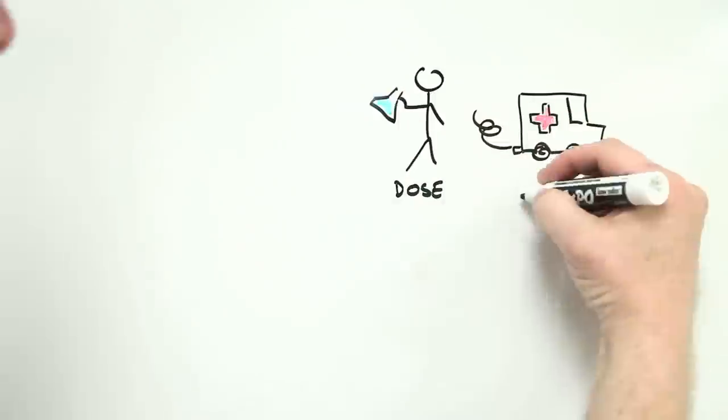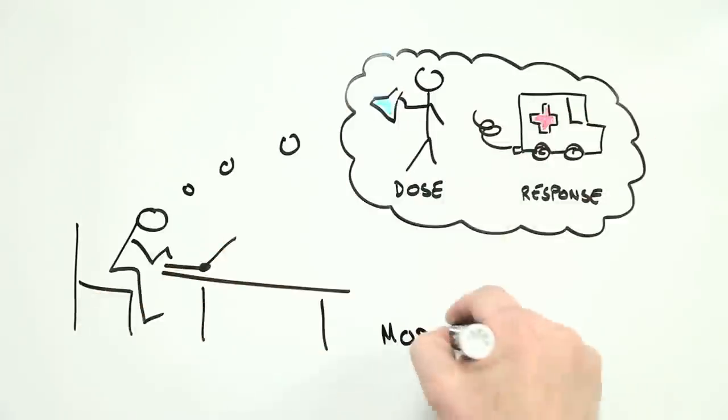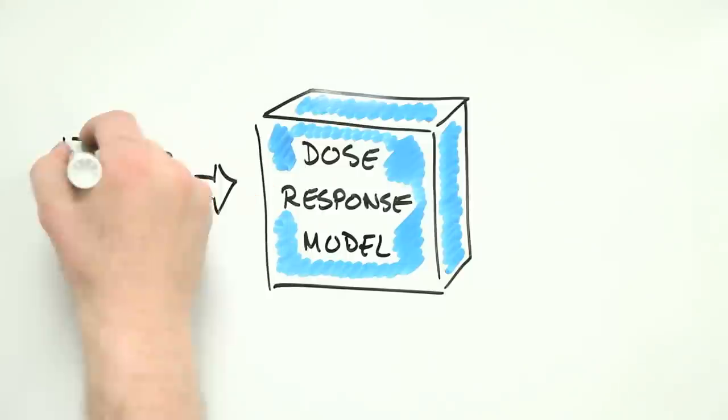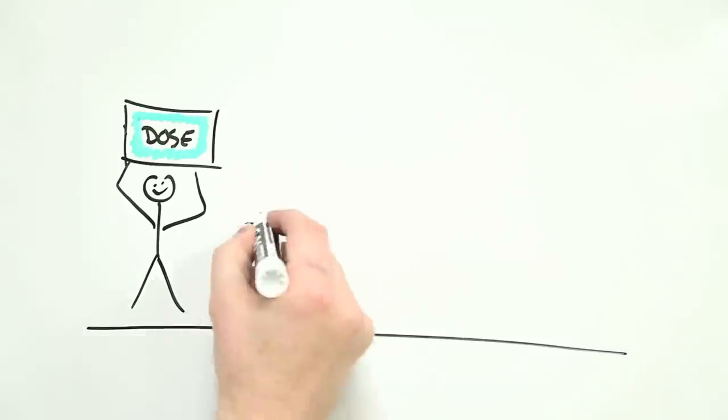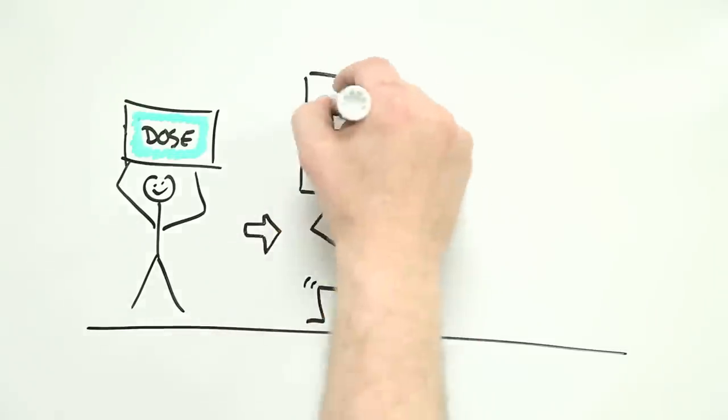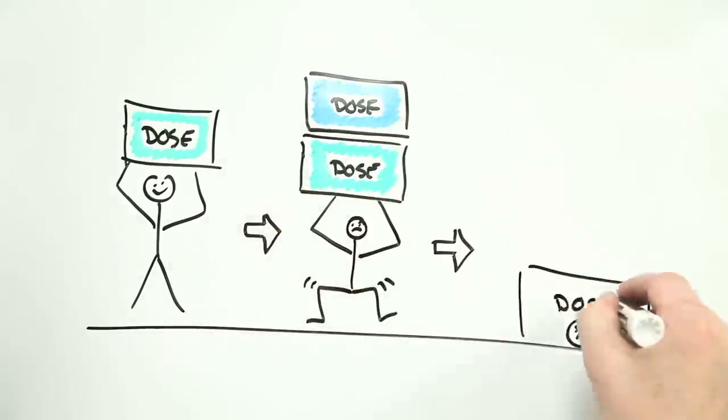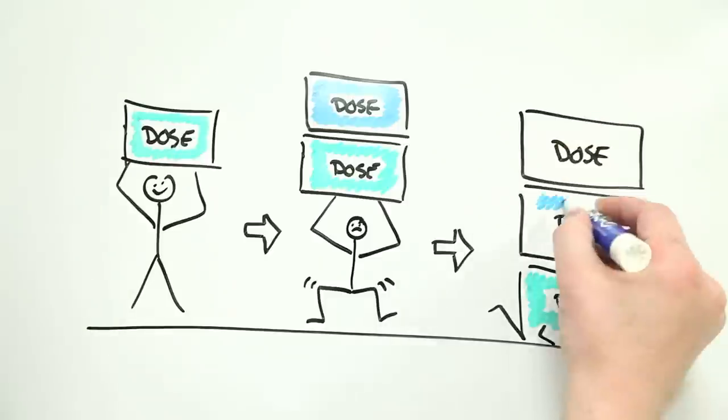This week, RiskBytes is back to looking at dose-response models to estimate risk. To recap, a dose-response model describes the relationship between how much of something gets to a specific part of your body and the magnitude of the effect that its presence causes.